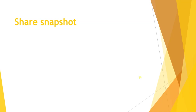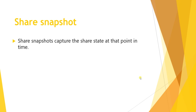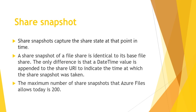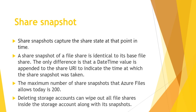A share snapshot captures the file share state at that point in time. A share snapshot of a file share is identical to its base file share — the only difference is that a date-time value is appended to the share snapshot name. The maximum share snapshots allowed per file share is 200. If we delete the storage account, it wipes out all file shares inside the storage account along with their snapshots.